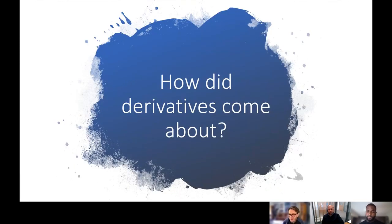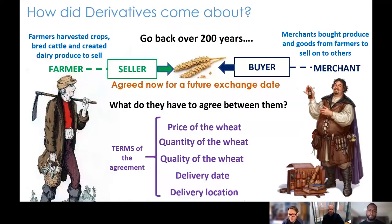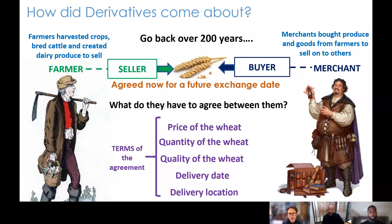Derivatives have been around for a couple of hundred years. They go back to simple trades carried out between two parties — the first types originated between individuals trading things like farmers and merchants. A couple of hundred years ago, a farmer might have harvested crops, had cattle or livestock to sell, and rather than supermarkets, merchants would travel around buying products from those producing them from raw materials, then selling them on to somebody else.